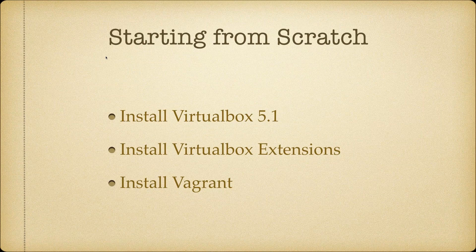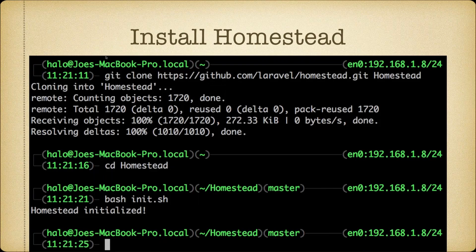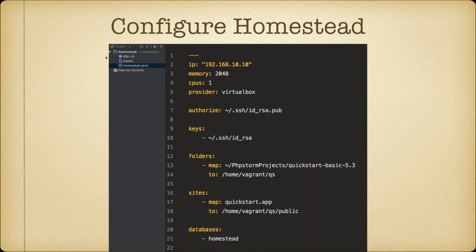How do you get Homestead? Starting from scratch, install VirtualBox 5.1 and the VirtualBox extensions. Note: if you have VirtualBox 5.0 installed and use the About > Update menu, it will only keep you on 5.0.x — you have to go to the website to download 5.1. Once VirtualBox and Vagrant are installed, clone the Laravel Homestead Git repo from GitHub to your user's home folder. Inside the Homestead folder, run the INIT.sh script, which creates a hidden .homestead folder in your user directory where you can customize Homestead without worrying about merge conflicts when updating.